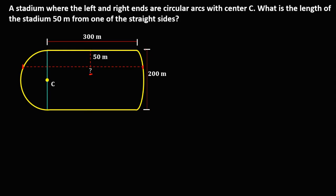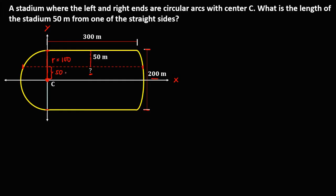To solve this problem, since this side is 200 meters, this side is also equal to 200 meters. From the center C to any point of the arc or any point of the circle, that's the radius. The radius is equal to 100 meters because that's half of 200 meters. If we put this figure in a plane with the x-axis and y-axis, and this side is 50 meters, so this side is also equal to 50 meters because the radius is 100 meters.